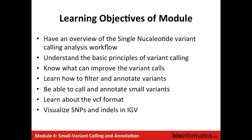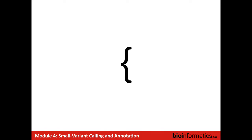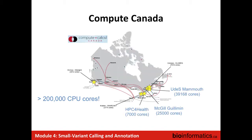Before we start, I will do a shameless advertisement for what we are doing. Especially if you are Canadian, we have a strong partnership with Compute Canada. It's a free set of high performance computing resources available for any academic researcher. There are more than 2,000 CPU cores available, a lot of data, and there are one or two new HPC centers that opened this year.